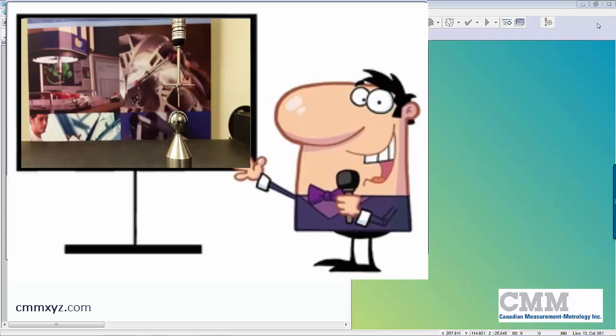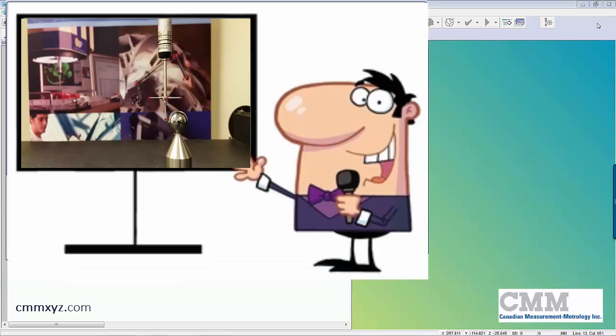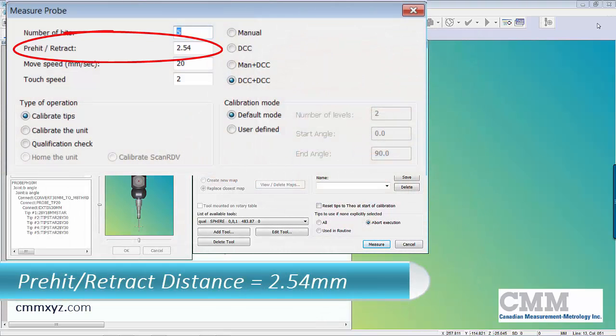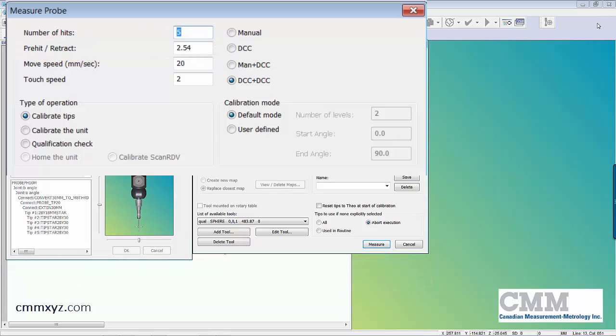The purpose of that is to locate the center point of the sphere exactly so that all the hits are evenly distributed in that pre-hit retract distance, in this case 2.54 millimeters. Because we have to eyeball the squareness of our star probe build, this helps us to avoid miss hits and crashes.